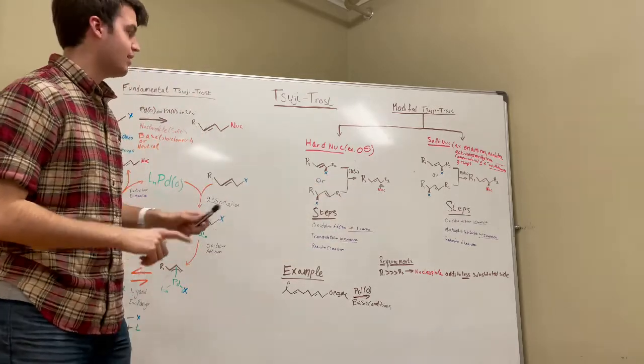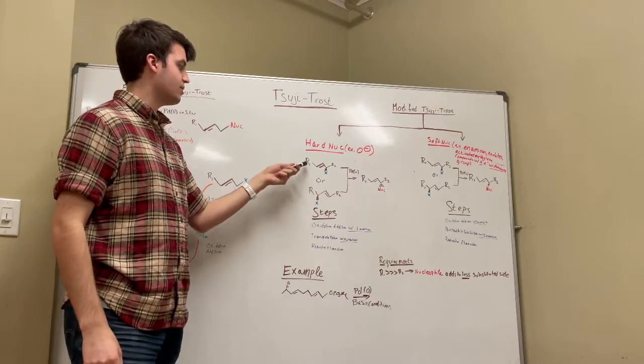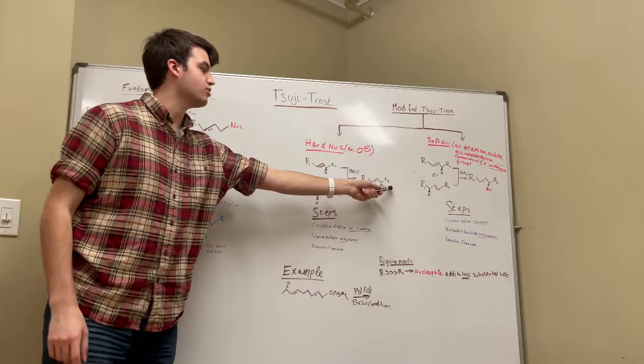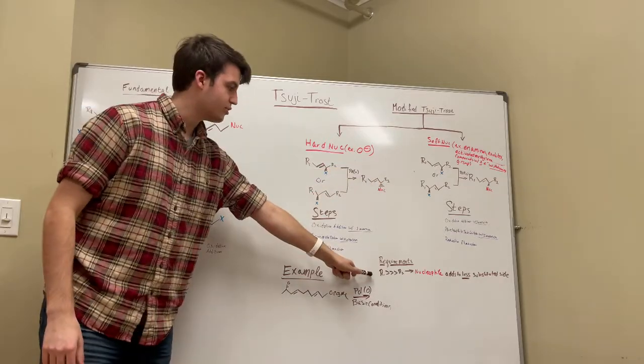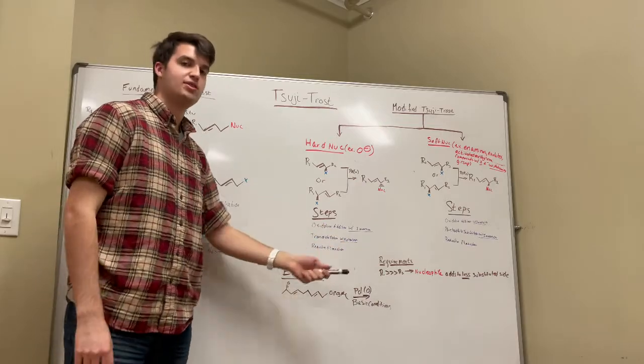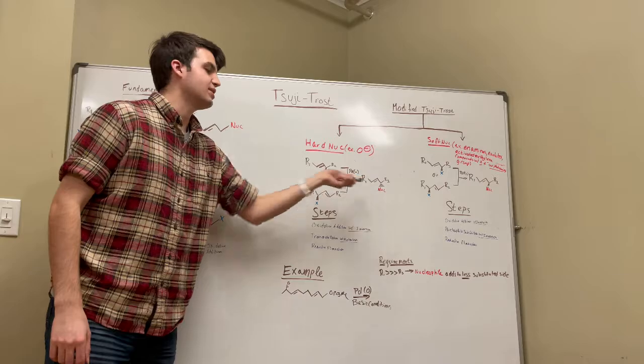And actually, what we see here is that, regardless of where the leaving group is in relation to R1, R2, and the alkene, it always ends up closer to R2. This is assuming that R1 is bigger than R2, so the nucleophile adds to the less-substituted side. So, we always will find the nucleophile on the less-substituted side of this alkene.